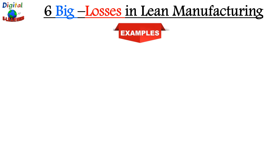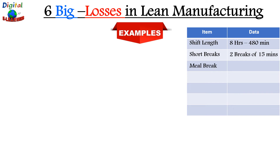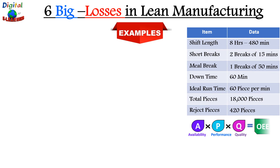Let's understand the concept of six big losses with the help of an example. We have a shift length of eight hours, equivalent to 480 minutes, with two short breaks of 15 minutes each, one meal break of 50 minutes, downtime of 60 minutes, ideal cycle time of 60 pieces per minute, total pieces produced of 18,000, and rejected pieces of 420. We will use this data to calculate losses in terms of availability, performance, and quality.